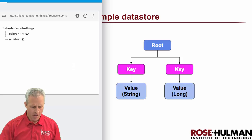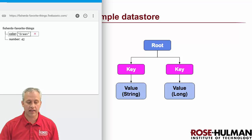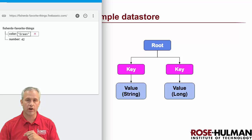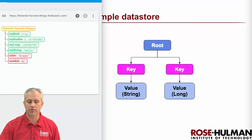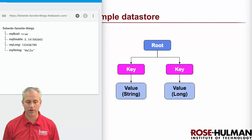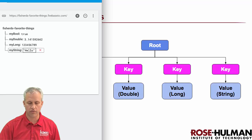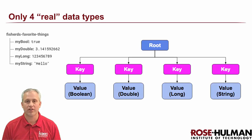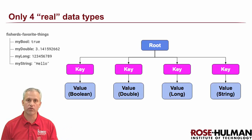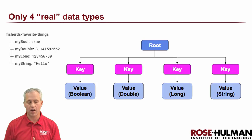I'll use an example Firebase database from my favorite things app. Right now it has a key called 'color' pointing to a string value, and a key called 'number' pointing to a number — in this case a long. There are actually only four types of data saved in the Firebase database: booleans, doubles, longs, and strings. The tree has to end in one of those four types of values.